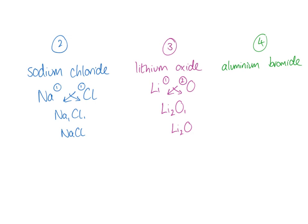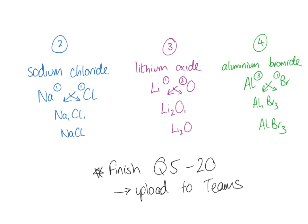For question four, aluminium bromide: aluminium is Al, bromide is bromine so it's Br. Aluminium is in group three so has a valency of three; bromine is in group seven so has a valency of one. Swap and drop gives Al1Br3, ignore the one to get AlBr3. Hopefully you're getting those okay. Now finish questions five to twenty and upload your answers to Teams. Questions nineteen and twenty are on page six — please stop at that point and don't go further, as the next examples are a little bit different.